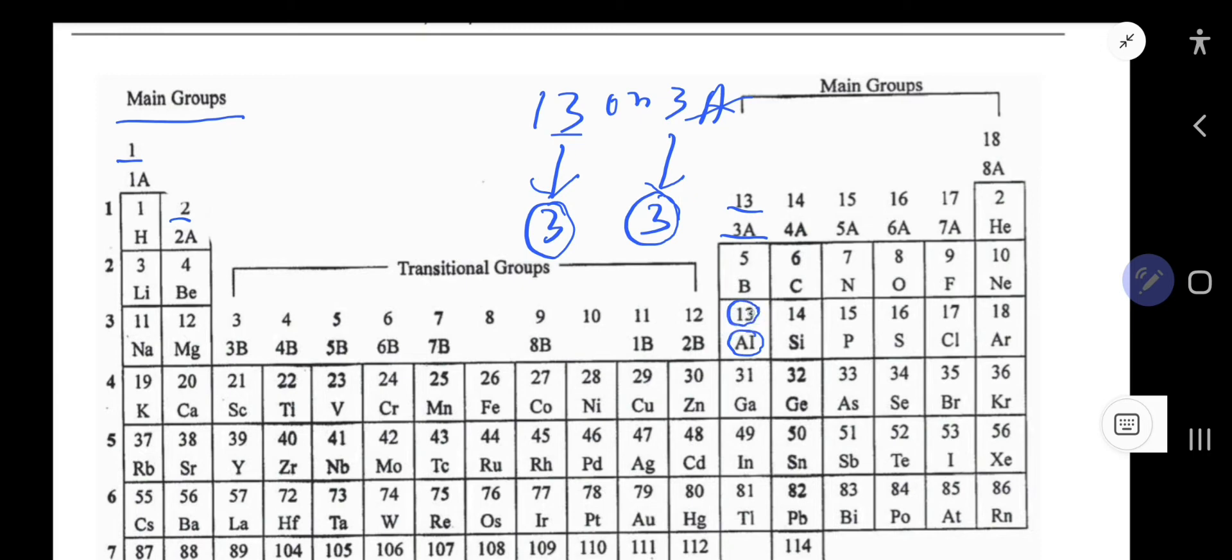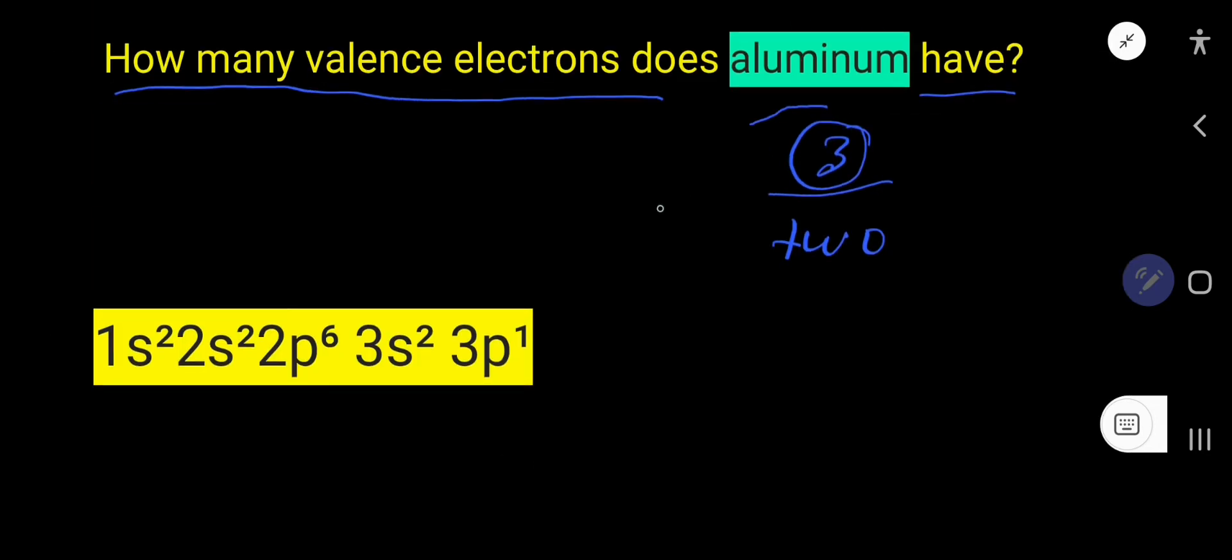show you the second way to find out the valence electrons of aluminum from electron configuration. The atomic number of aluminum is 13. Look, atomic number of aluminum is 13. This means that it has 13 protons, whose charge is positive, and 13 electrons.